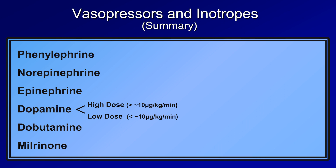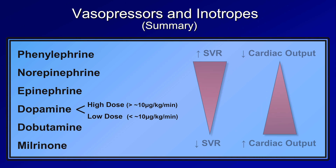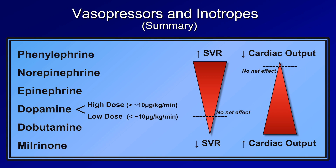Consider six drugs in order: phenylephrine, norepi, epi, dopamine at high and low doses, dobutamine, and milrinone. Vasopressin is excluded as it's only a second-line agent in septic shock; isoproterenol is excluded as it's not used in shock at all. Plotted on scales of increased-to-decreased SVR and increased-to-decreased cardiac output, this simplification gives the general picture and is much easier to remember than the full table, though the zero-effect points differ between SVR and cardiac output.